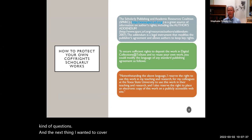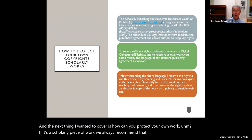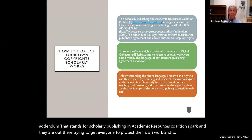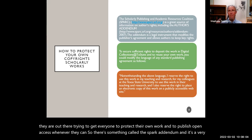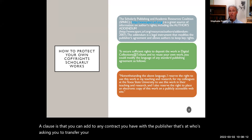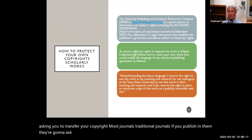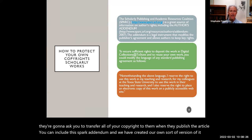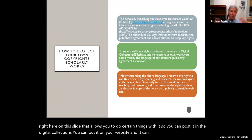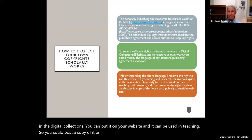The next thing I wanted to cover is how you can protect your own work. For scholarly work, we always recommend using what's called the SPARC addendum — that stands for Scholarly Publishing and Academic Resources Coalition. They are out there trying to get everyone to protect their work and to publish open access. The SPARC addendum is a short clause you can add to any contract with a publisher who's asking you to transfer your copyright. It allows you to post your work in digital collections, put it on your website, use it in teaching, and post a copy on Canvas.